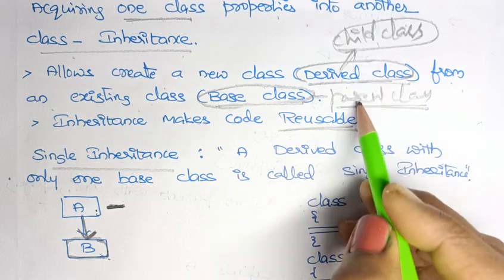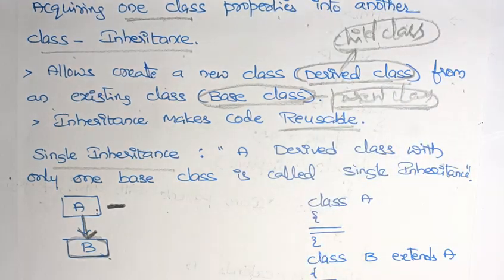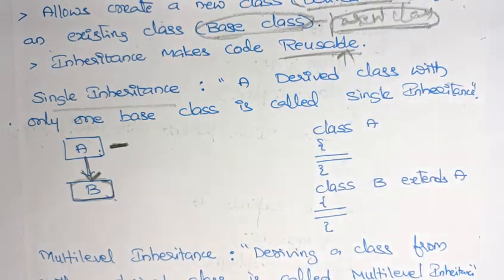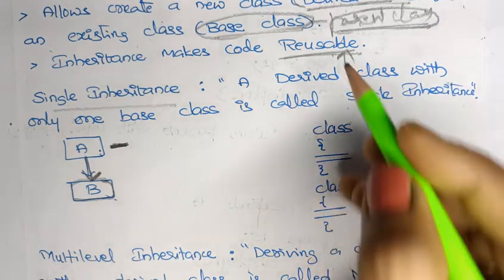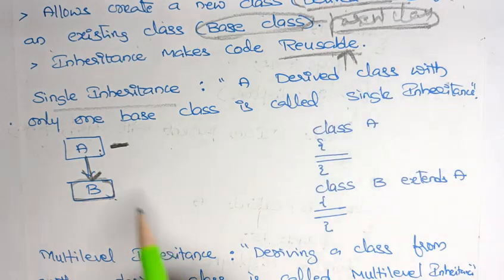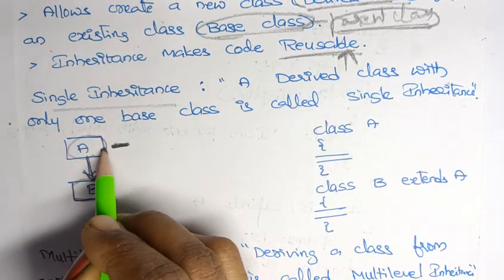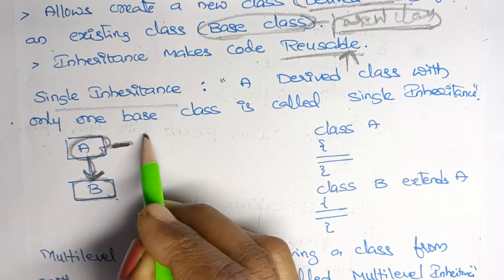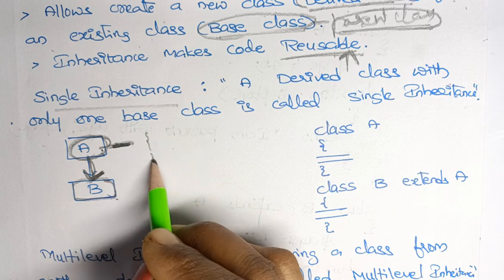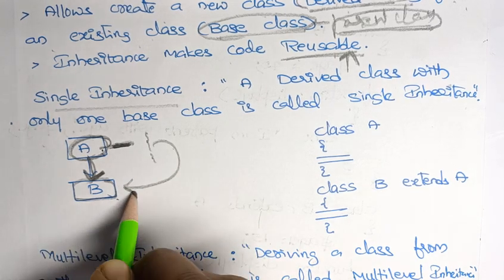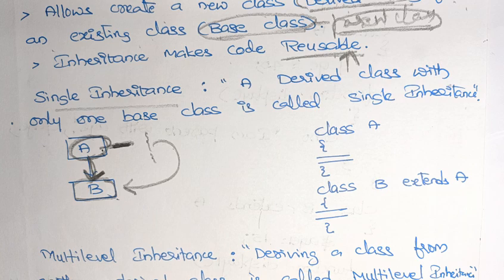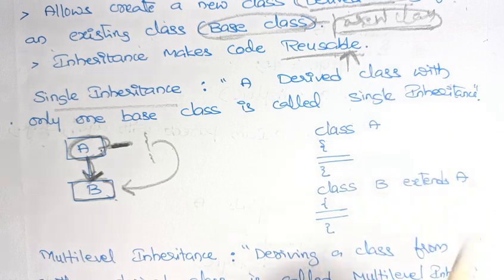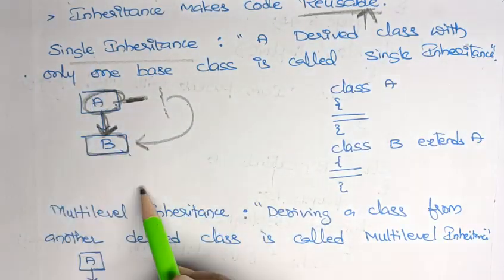The child class will get the properties of the parent. Inheritance makes code reusable — by using inheritance, we can make code reusable because whatever variables and methods are there in the parent class, we are using those in the child class.